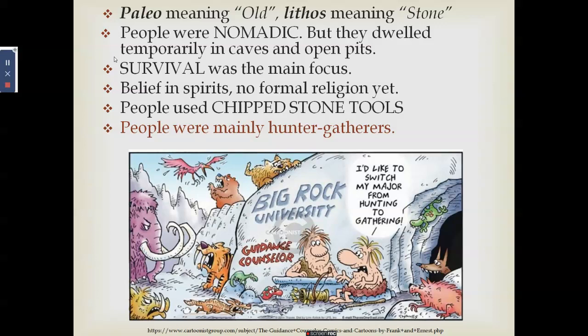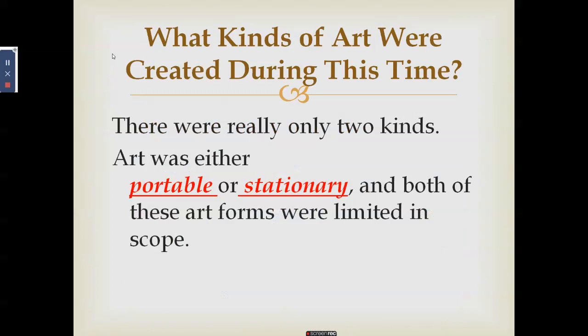The stone tools of the Paleolithic period were chipped — the stone was broken off at the edges to serve as tools, equipment, or weapons for survival. People were mainly hunter-gatherers: they hunted for food and also gathered berries, nuts, plants, and other edible things.